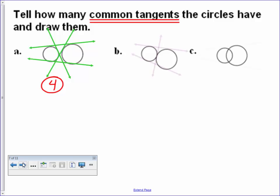Hopefully for B, you got three lines for those two circles. And then for C, you should get two, because you can't go down the middle, because remember tangents do not go inside the circle.